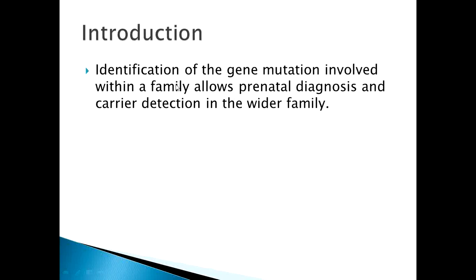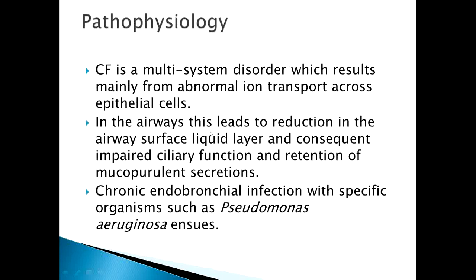Identification of the gene mutation involved within a family allows prenatal diagnosis — that is, diagnosis before birth — and carrier detection in the wider family, such as the parents. Cystic fibrosis is a multi-system disorder which results mainly from abnormal ion transport across epithelial cells.